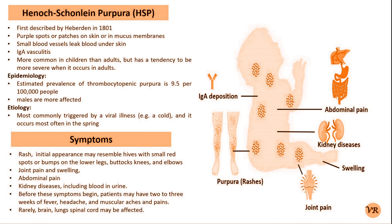Most cases of HSP resolve on their own with supportive care. Pain management and hydration are important. Non-steroidal anti-inflammatory drugs can be used to manage joint pain. In more severe cases or if there is significant renal involvement, corticosteroids or other immunosuppressive medications may be used. Regular follow-up is important to monitor for potential complications, especially renal involvement.